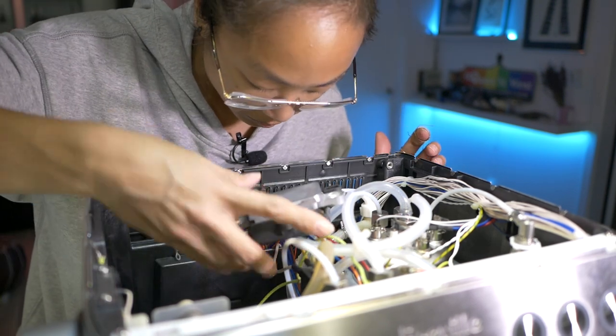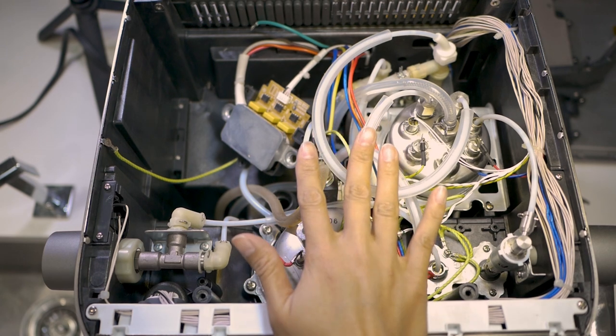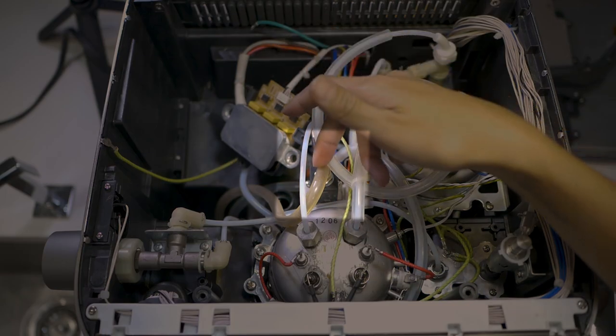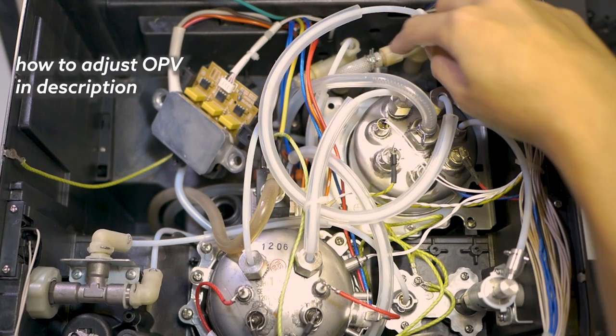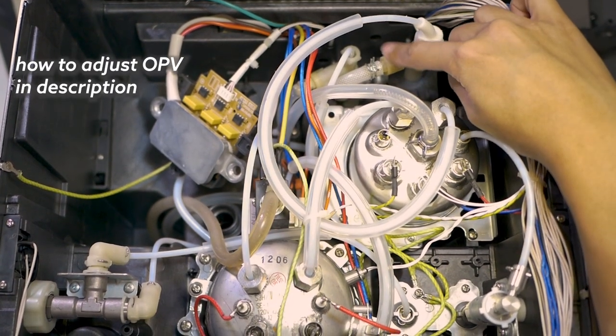Carefully put that aside. This is from the front of the dual boiler. We essentially have our three way solenoid valve right here. If you wanted to adjust your overpressure valve, it would be this piece right here.